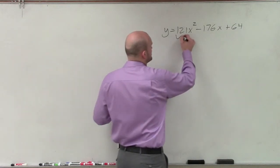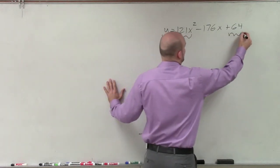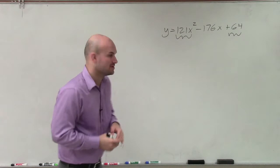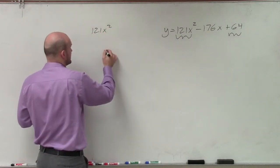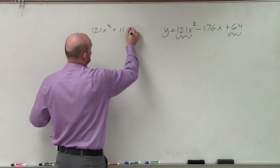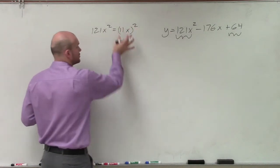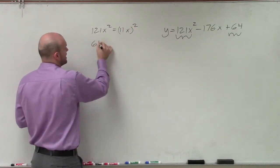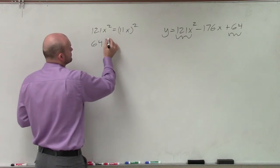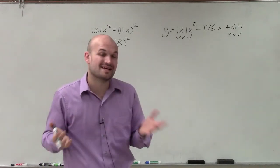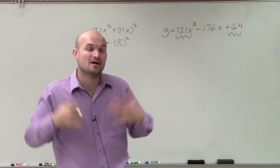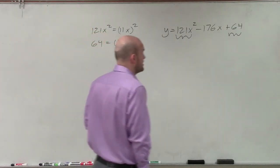So again, to determine that, we want to make sure our first term and our last term can be written as squared numbers. Well, 121x squared can be written as 11x squared. So it can be written as a squared number. And 64 can be written as 8 squared. So therefore, since both of our first and our last terms can be written as a square number, it's possible for us to be able to factor this as a perfect square trinomial.